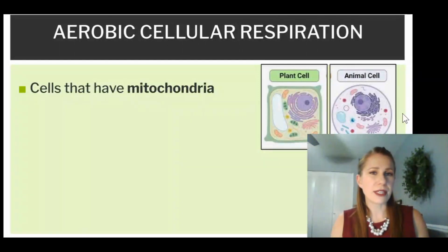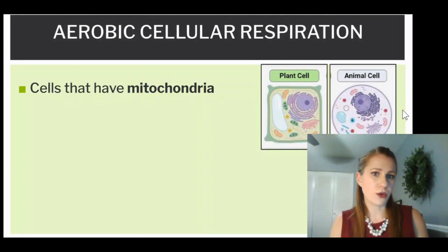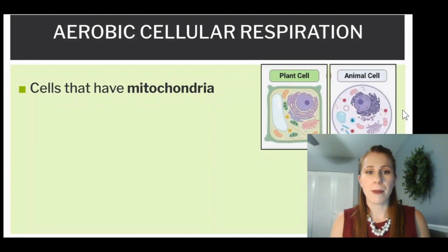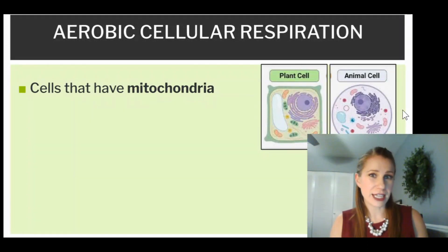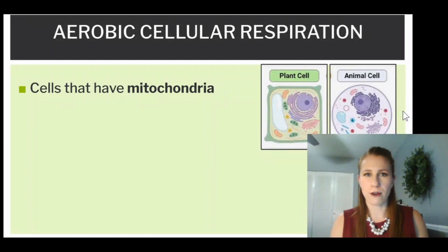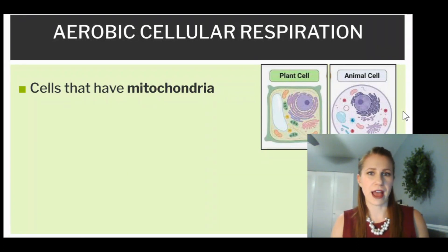This happens in cells that have mitochondria, which all eukaryotic cells do. And mitochondria — their job is to make energy in the form of ATP for the cell. So that's the goal of respiration: to make ATP energy. That's the main goal — make ATP energy.